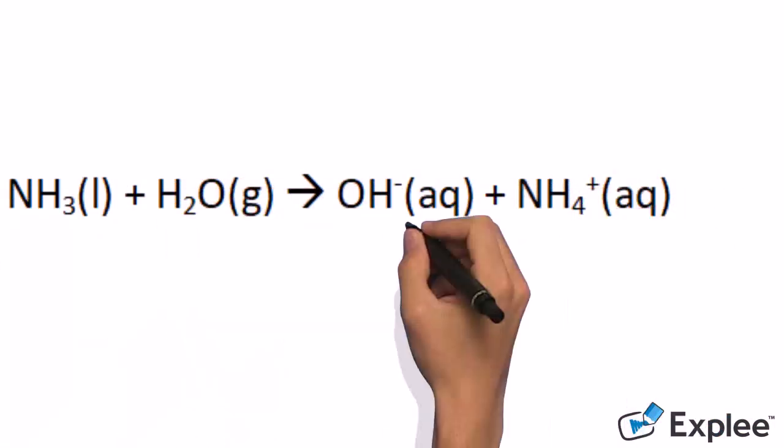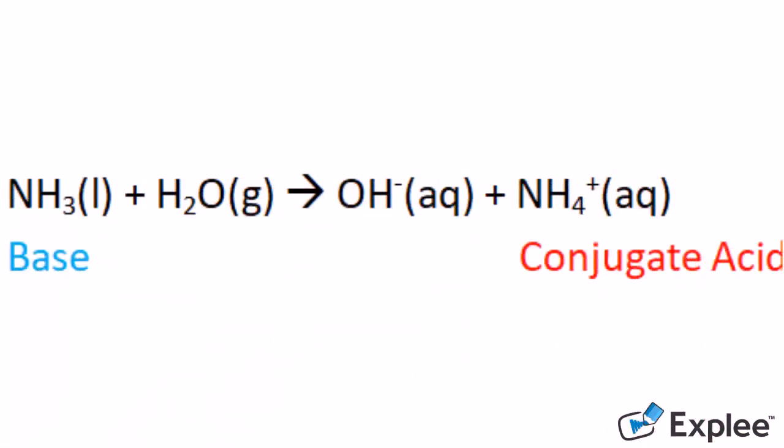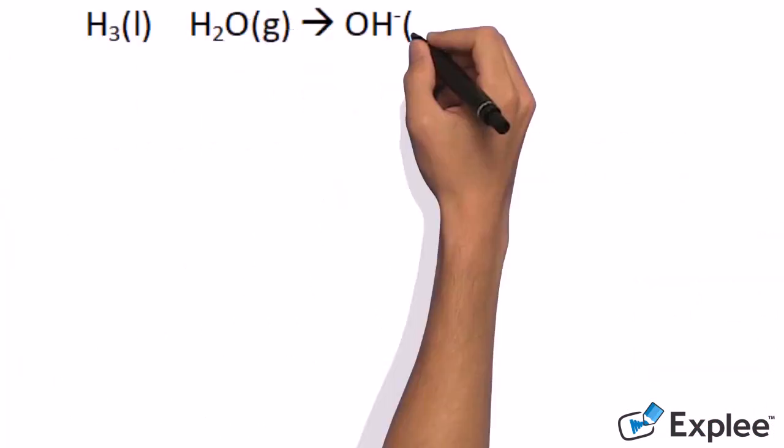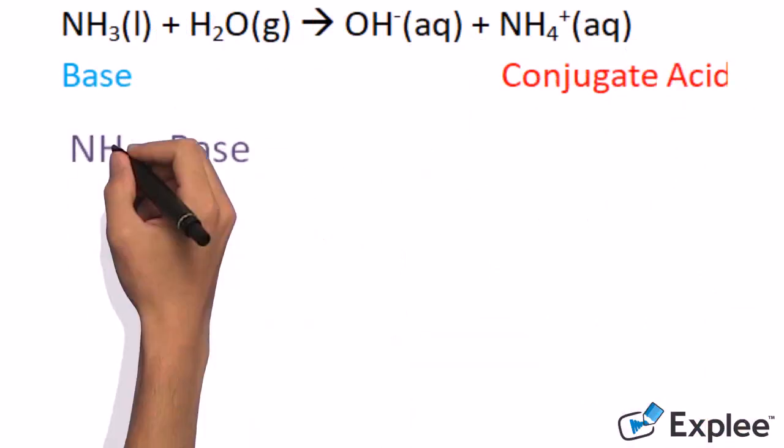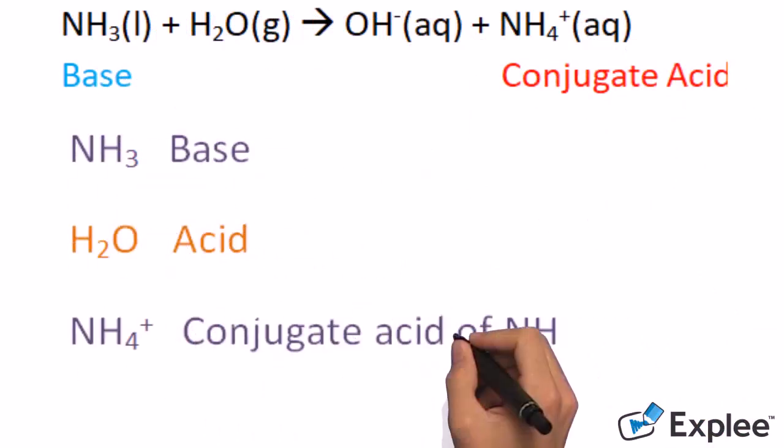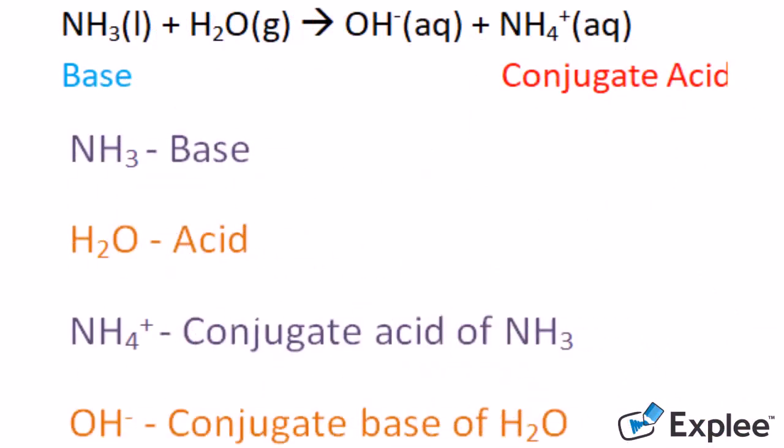The conjugate acid of a base is the base that gained a hydrogen proton from an acid and became more positive. In this example, NH3 acted as the base and H2O acted as the acid. In the product side of the equation, NH3 gained an H proton and became more positive.